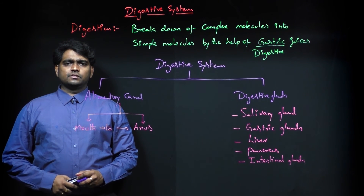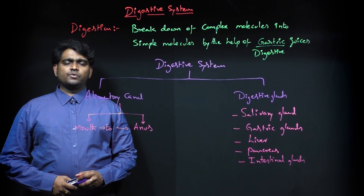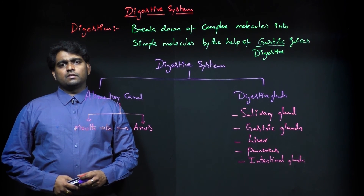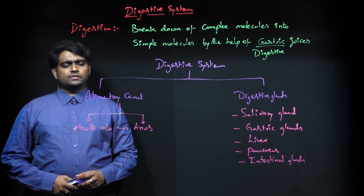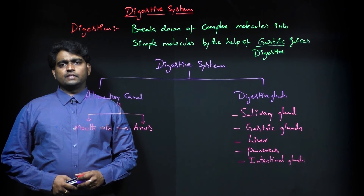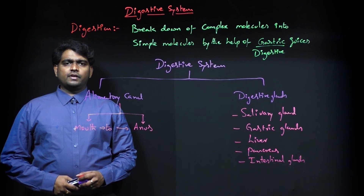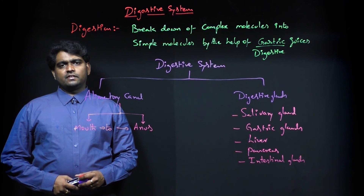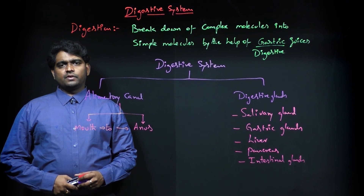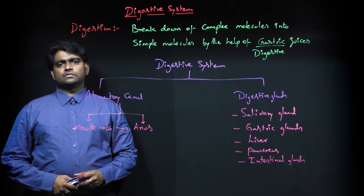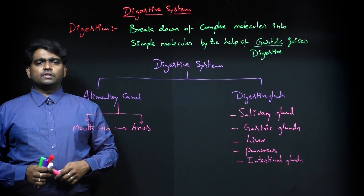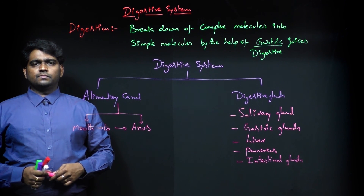The digestive system is composed of the alimentary canal and digestive glands. The alimentary canal starts from the mouth to the anus and is six meters long. There are five important digestive glands: three pairs of salivary glands, gastric glands, liver, pancreas, and intestinal glands. This is the introduction and basic structure of the digestive system.